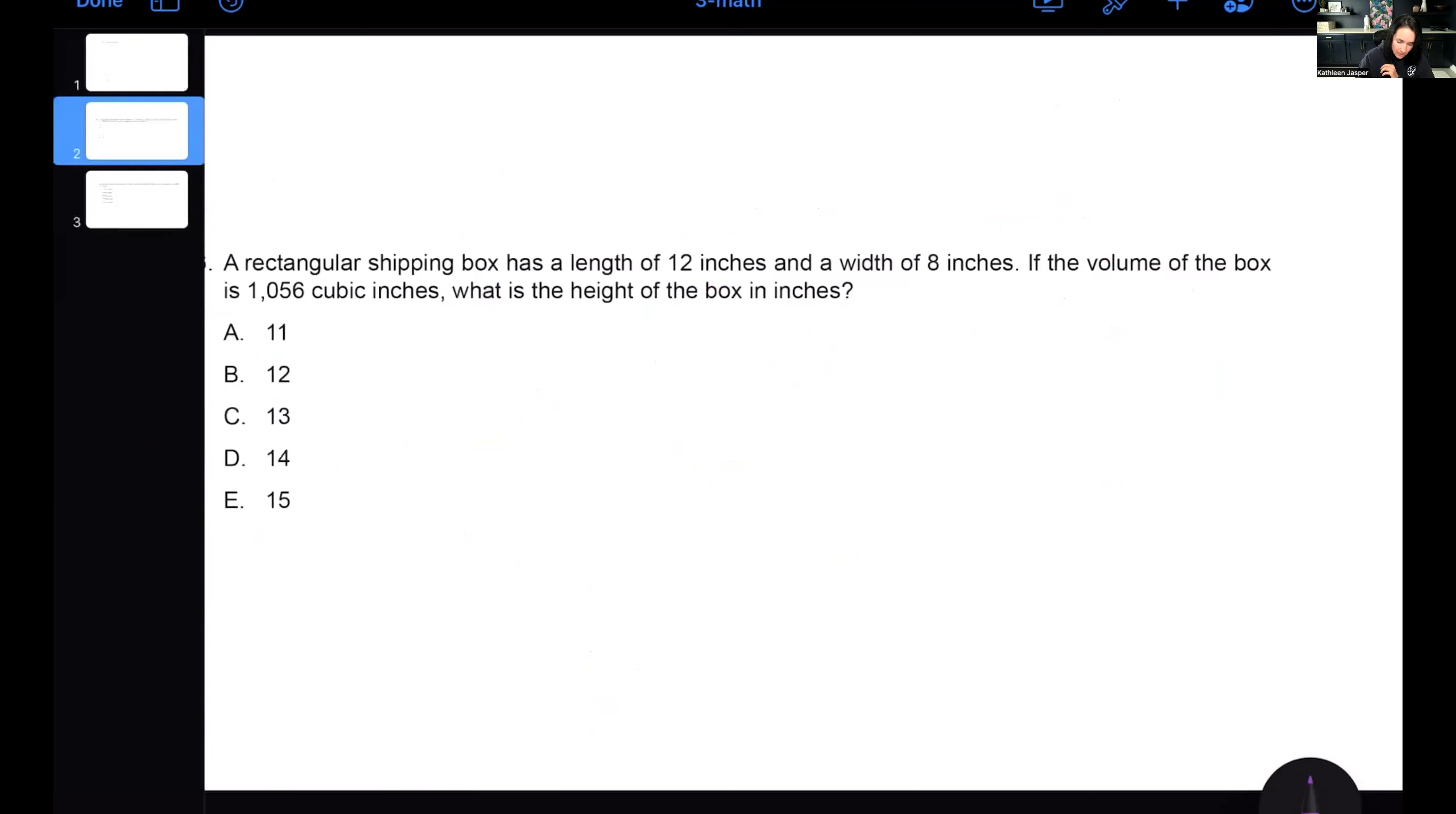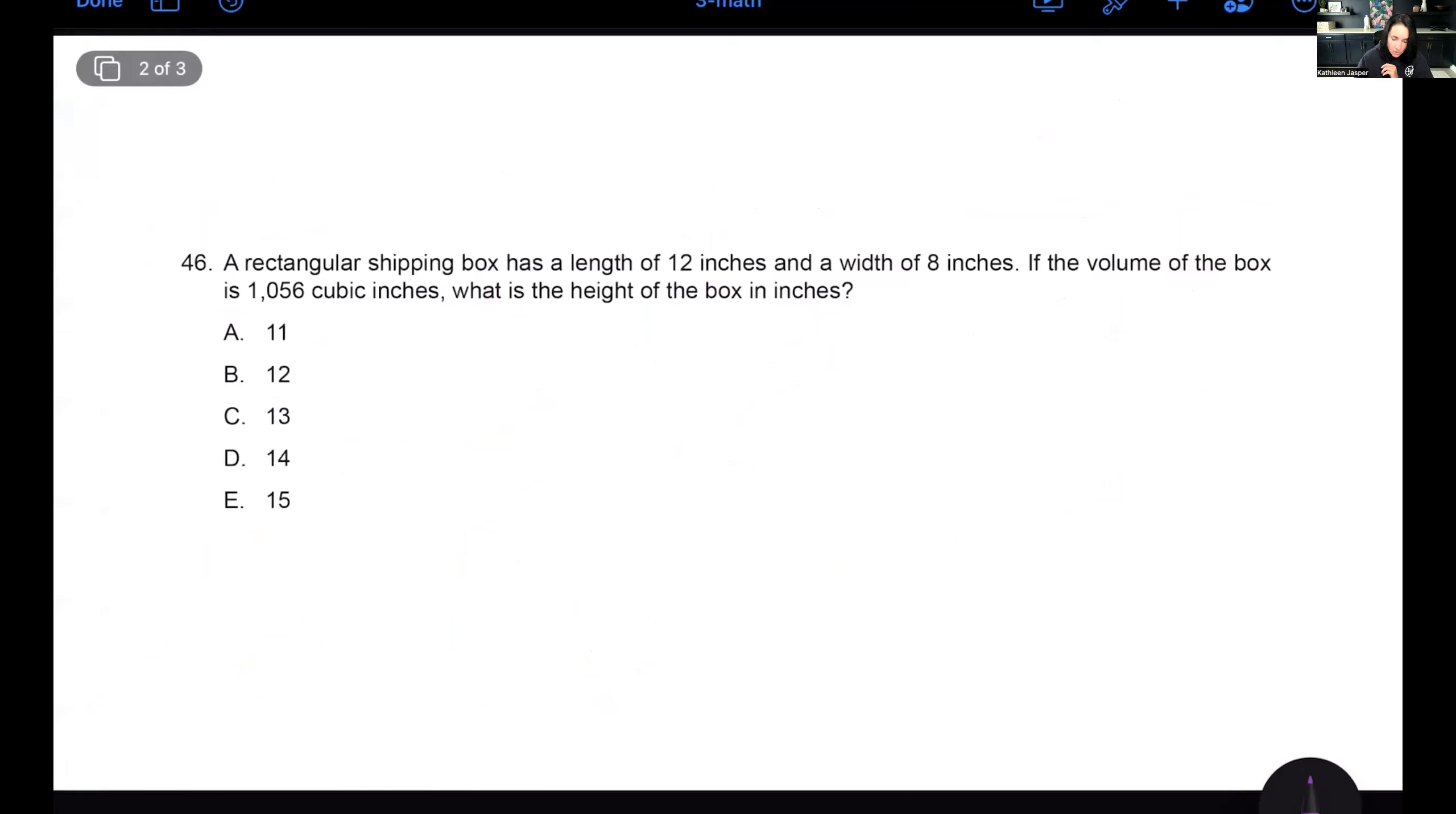Now let's go to the next question here. So this is a word problem. A lot of people have trouble with word problems and it is a geometry problem. So I always like to start with my answer choices. Can't do much there. They're just numbers. So let's have a look at the question. A rectangular shipping box. As soon as I hear shipping box, I'm going to think volume because I'm going to be putting stuff into the box, right?